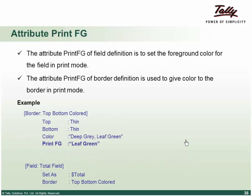Similarly, for font colors: people generally print fonts in black, but if required you can change font colors while printing by using print FG. At border definition, you can also change the color of the border while printing by using print FG.